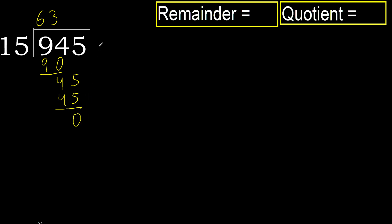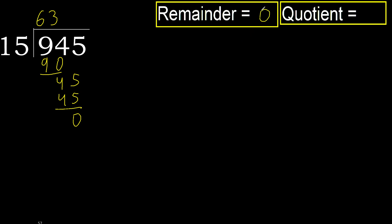Next. There is no number remaining, therefore finish it. 945 divided by 15 is 63.